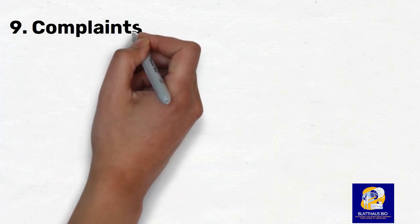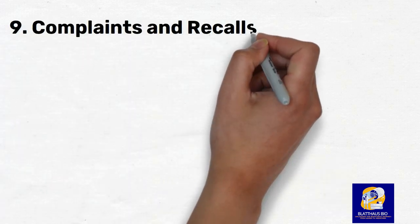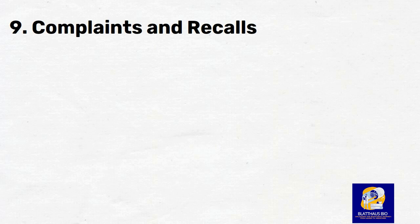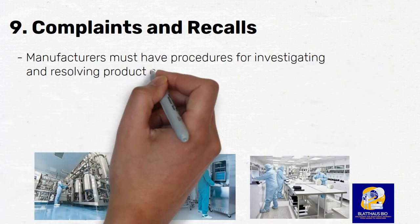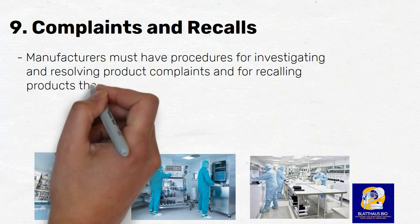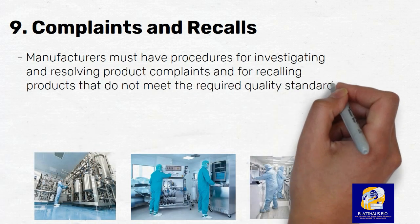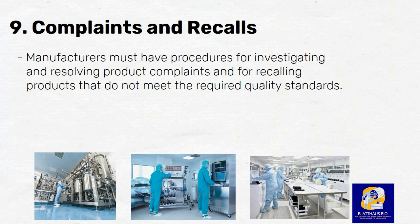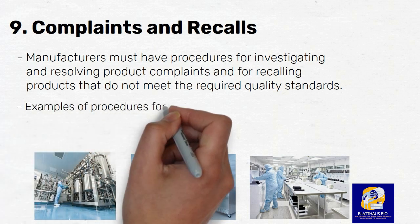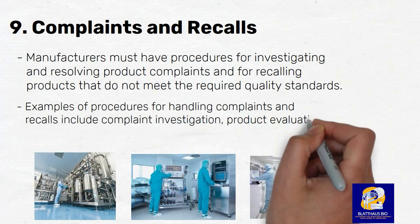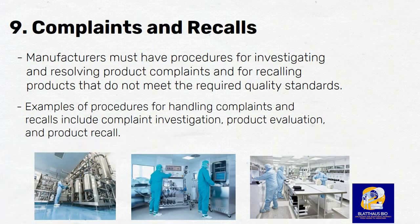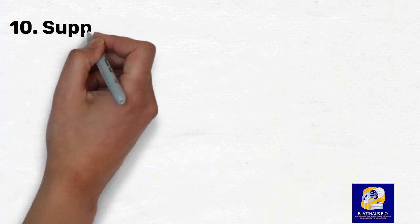Number 9: Complaints and Recalls. The ninth principle of GMP is the establishment of procedures for handling complaints and recalls. Manufacturers must have procedures for investigating and resolving product complaints and for recalling products that do not meet the required quality standards. Examples of procedures include complaint investigation, product evaluation, and product recall.